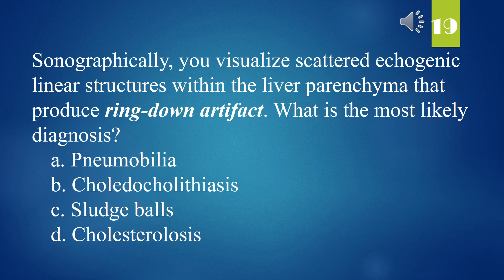Sonographically, you visualize scattered echogenic linear structures within the liver parenchyma that produce ring-down artifact. What is the most likely diagnosis? A. Pneumobilia. B. Choledocholithiasis. C. Sludge balls. D. Cholesterolosis. The answer is A. Pneumobilia.